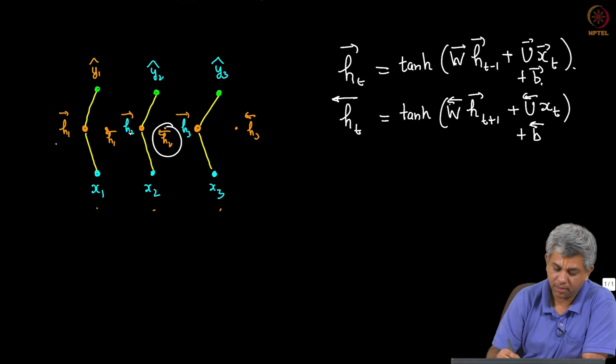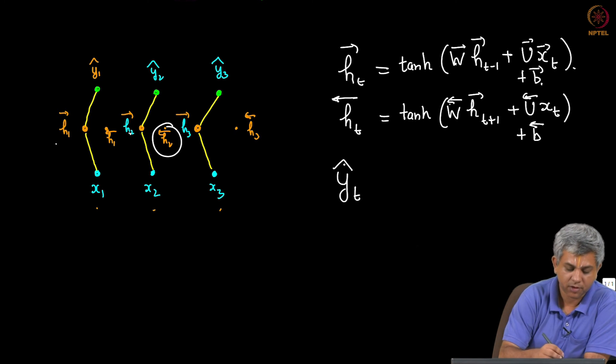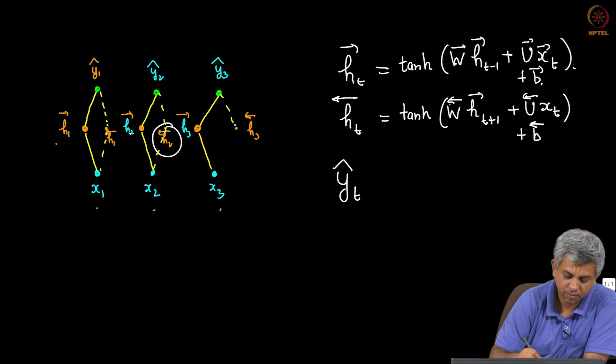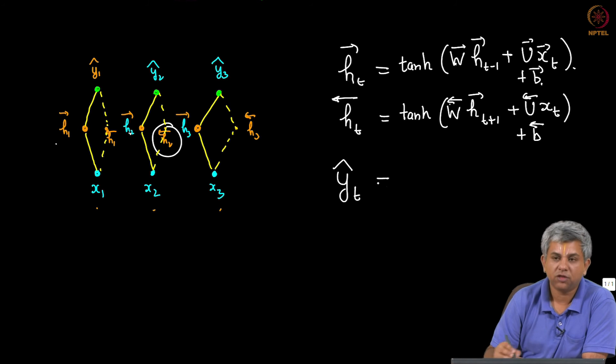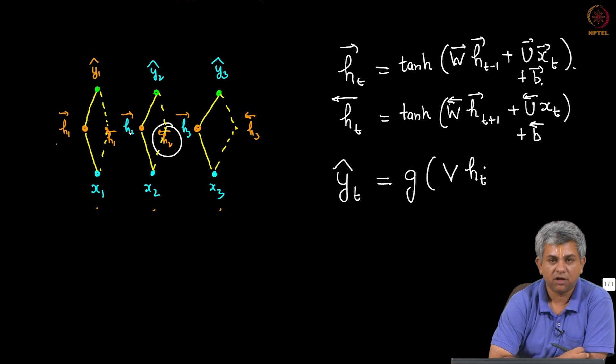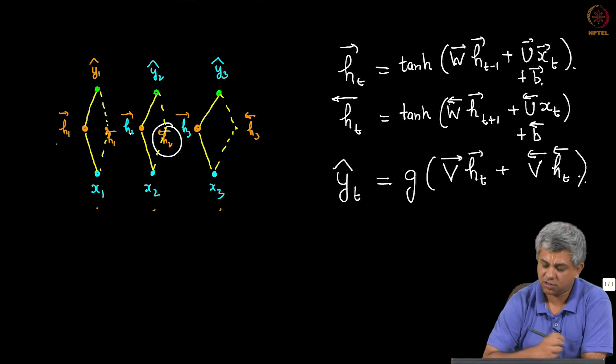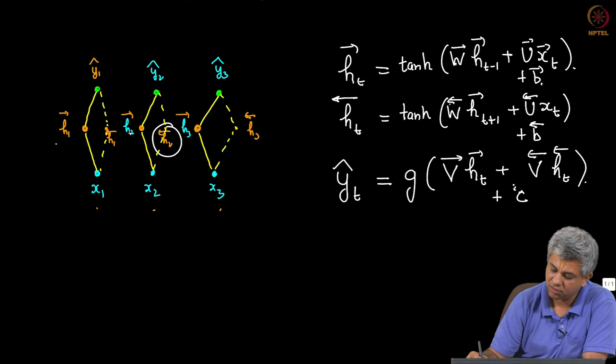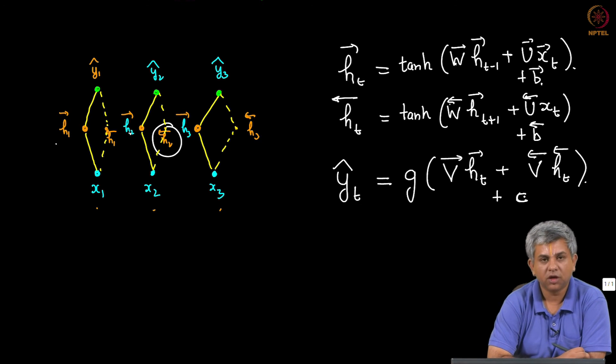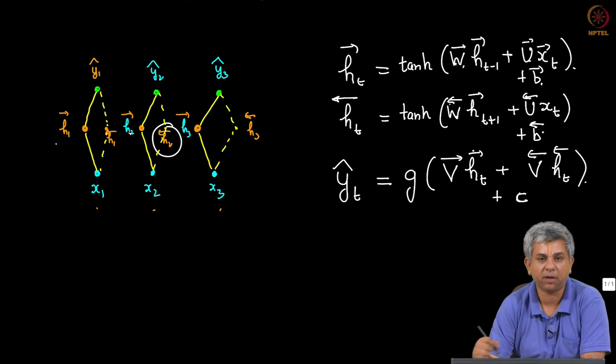Now what about Y? If I look at Y_T, now Y_T will take an input not only from here but also from here. So Y usually used to be simply some non-linearity of V times H_T. Now we are going to make it some V forward times H_T plus V reverse, actually I do not need to put inverse or forward, let us simply say C. So now you see here you have the bias unit, you have these two vectors, you have these two, one other bias. So this is 6 parameters and 9 parameters totally. So 9.